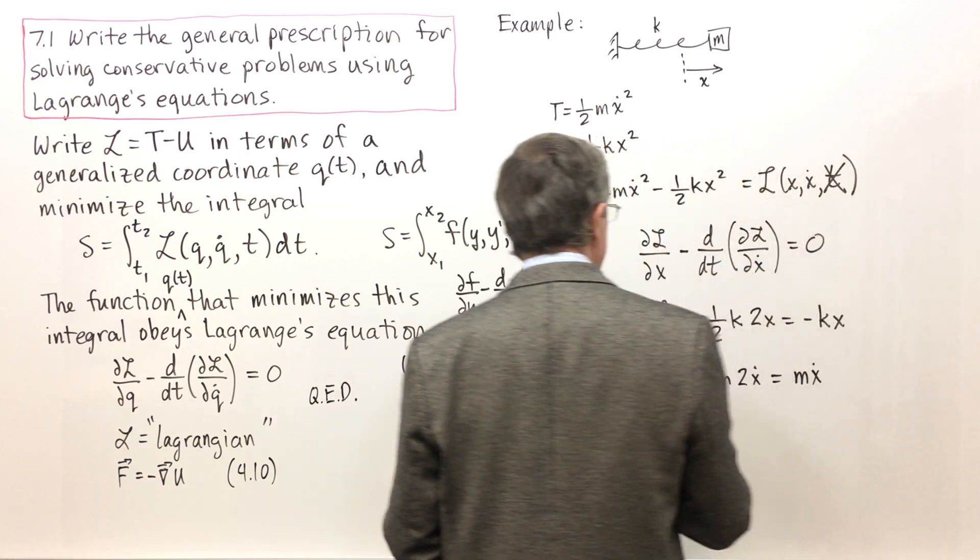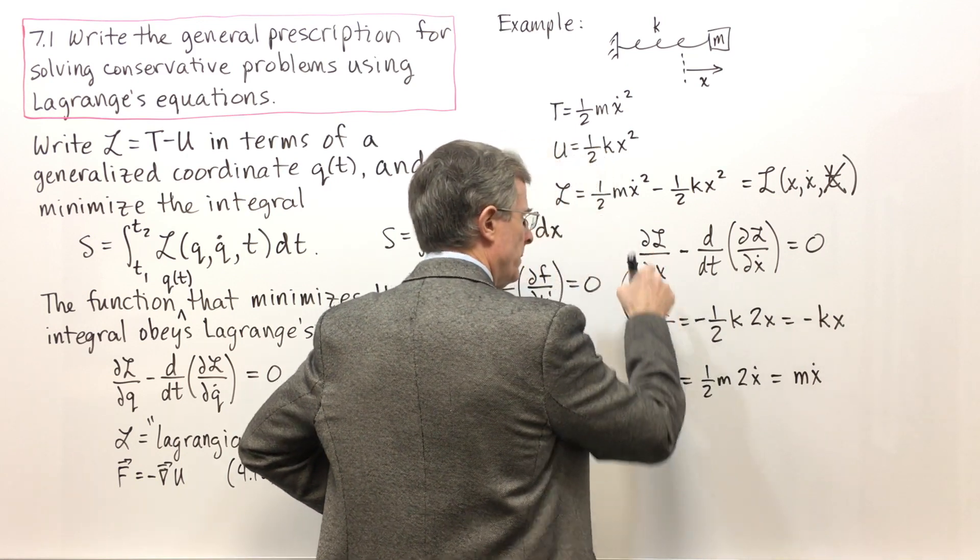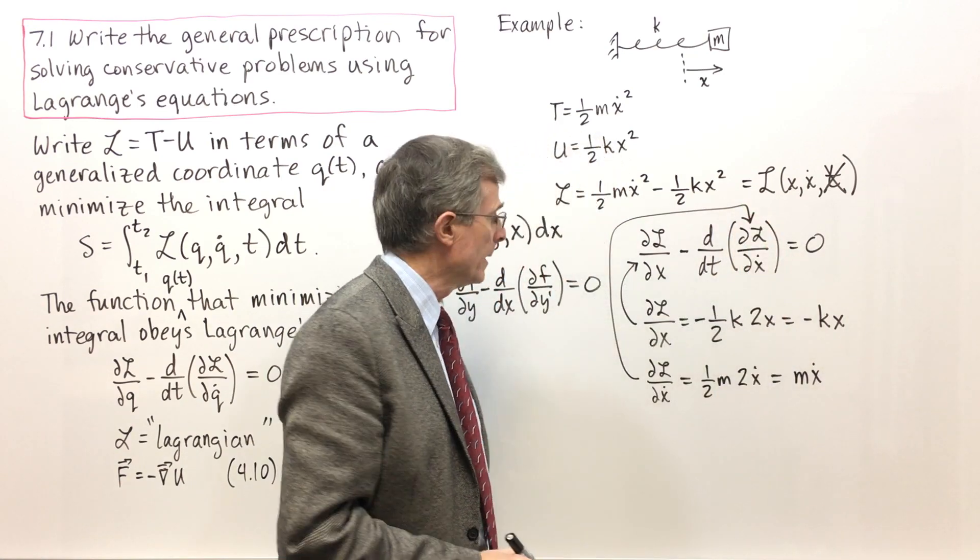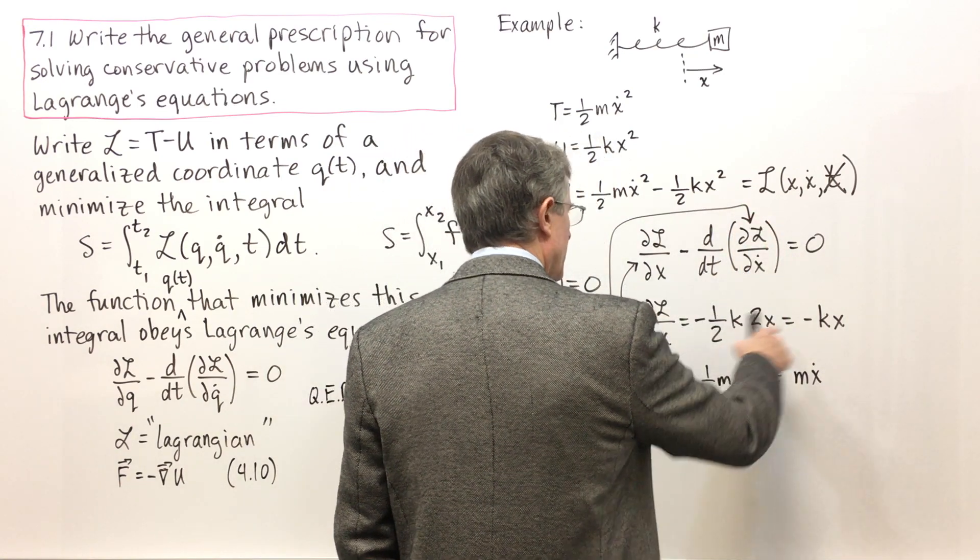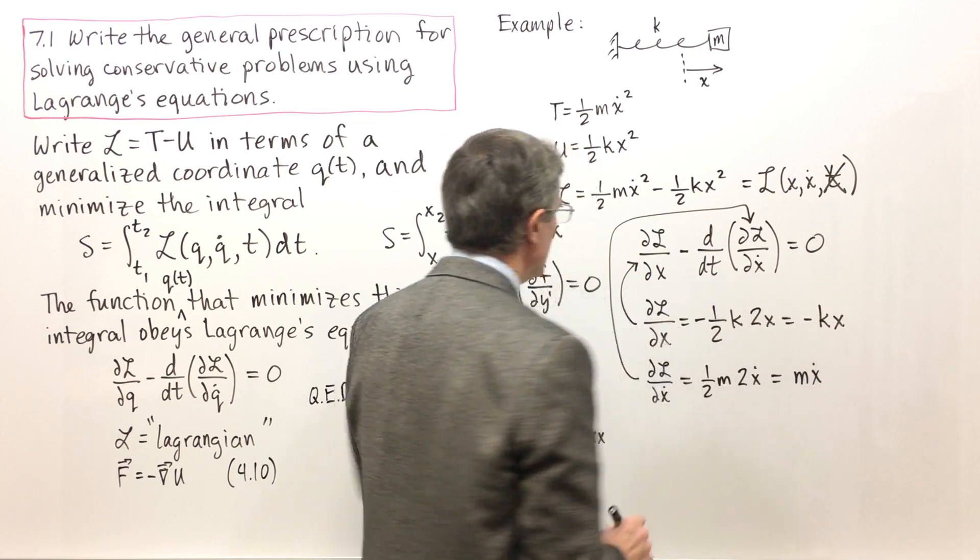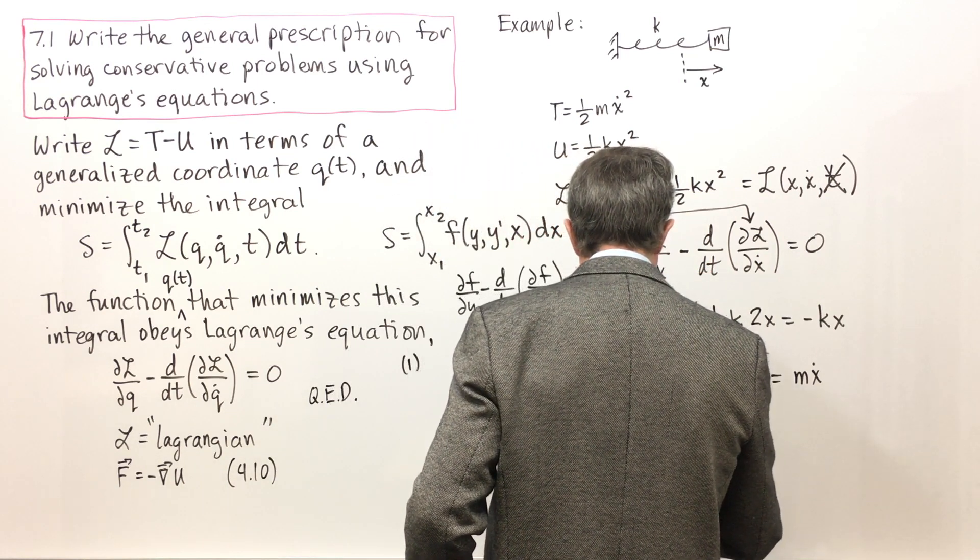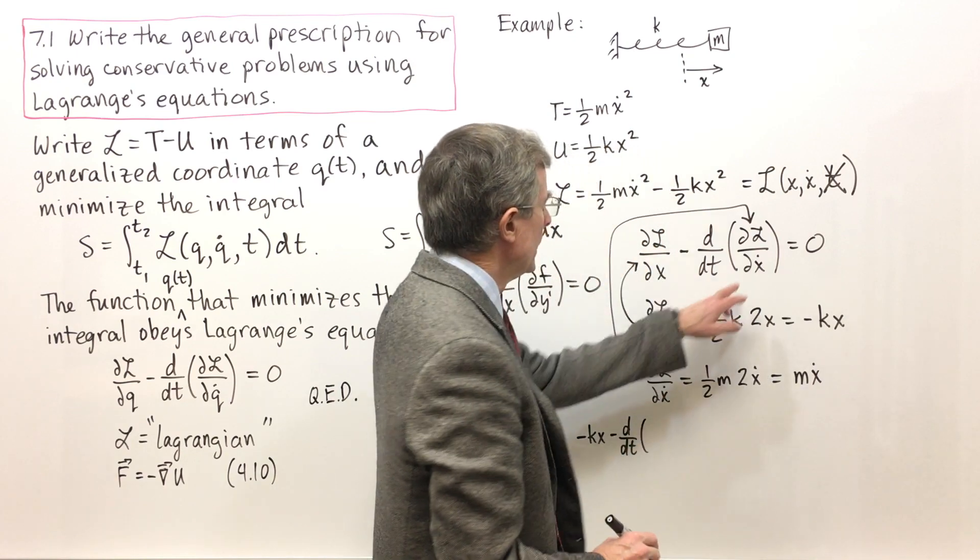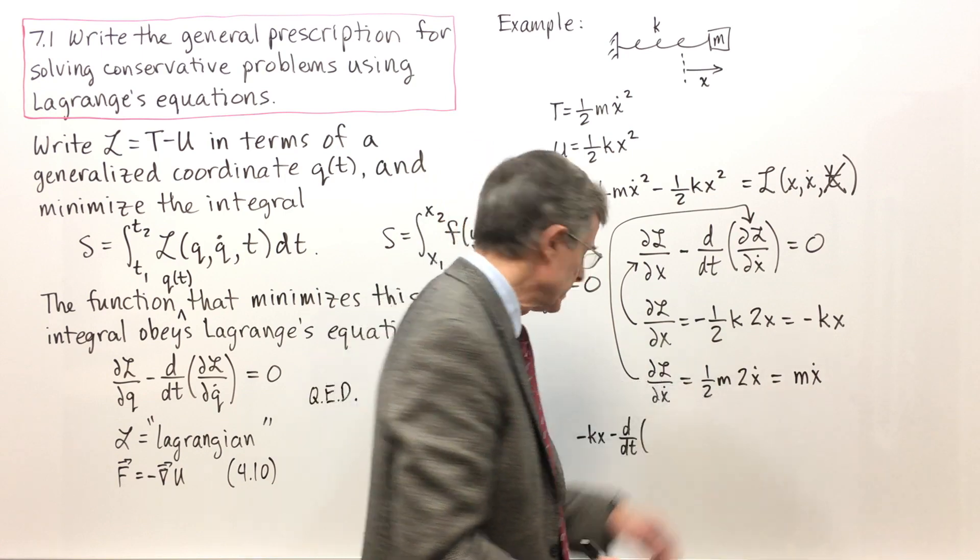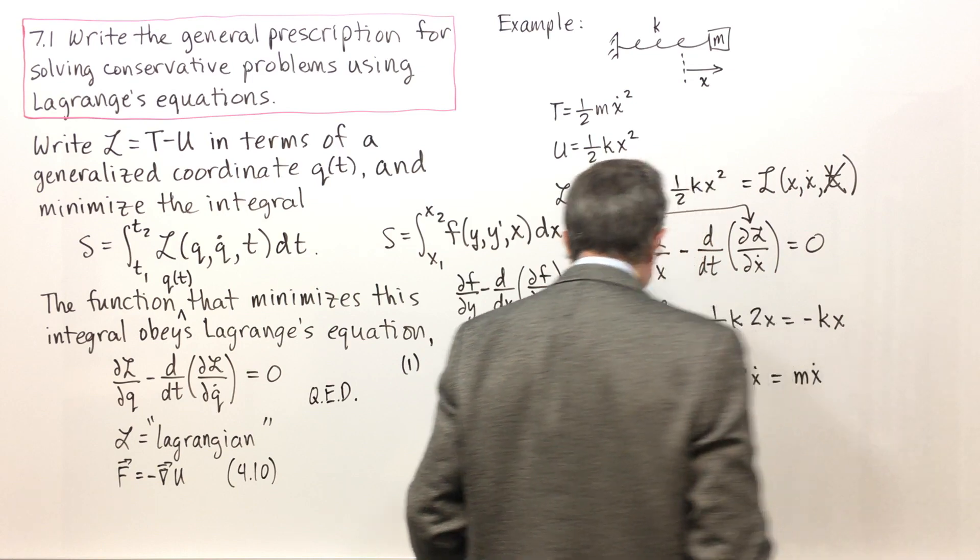Well, now we're going to substitute those into Lagrange's equation. This term goes in there. And this term goes in there. See what happens. Well, dL by dx is minus kx minus d by dt of dL by dx dot, dL by dx dot is just mx dot. And that is supposed to equal zero.